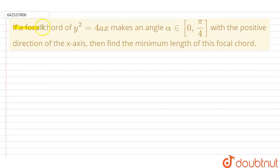So, today's question is, if a focal chord of y² equals 4x makes an angle alpha, where alpha belongs to 0 to π by 4, with the positive direction of x-axis, then find the minimum length of this focal chord.